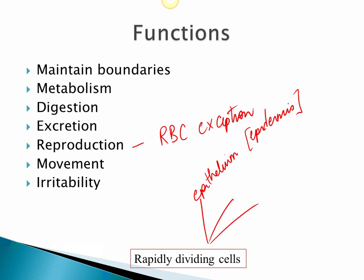Epithelial tissue is either present on the outside of the body, like the epidermis, or it lines organs inside. So it is constantly being abraded. There's a lot of friction between the skin and the environment, and the same goes for the lining of the esophagus — you eat foods of different textures and temperatures, so it can be constantly abraded. You want epithelium to regenerate really fast, so the cells are very rapidly dividing.